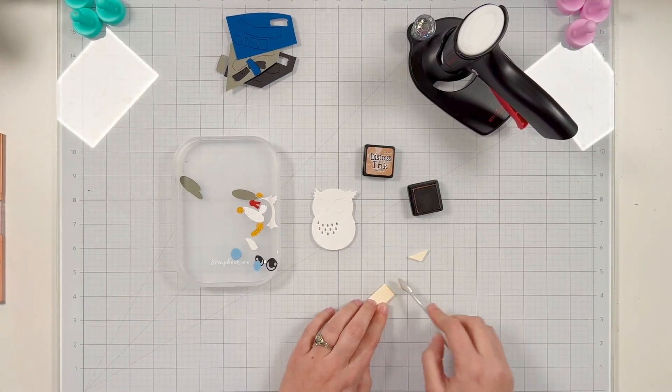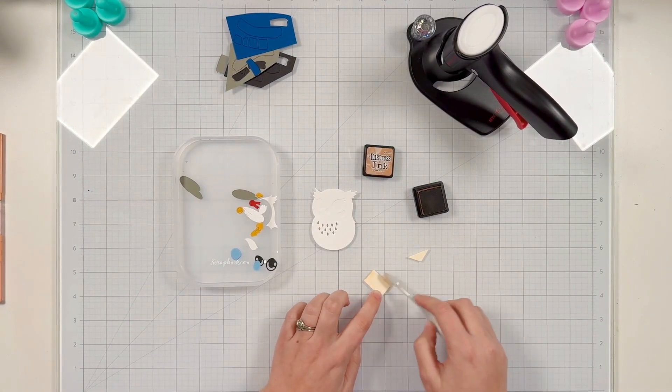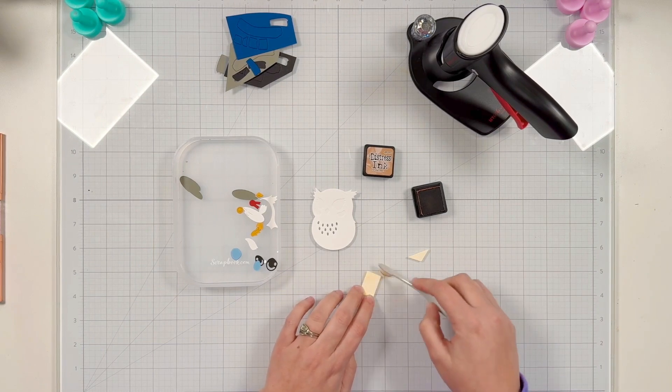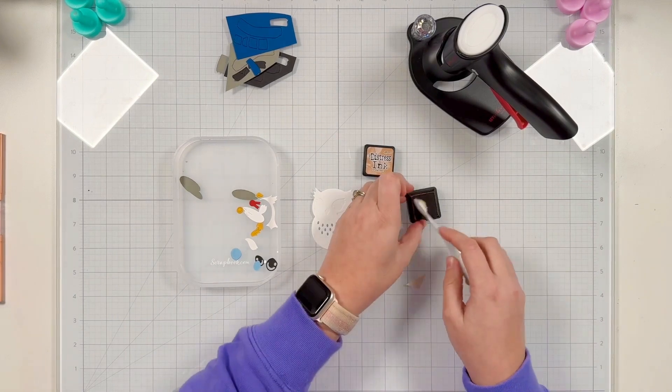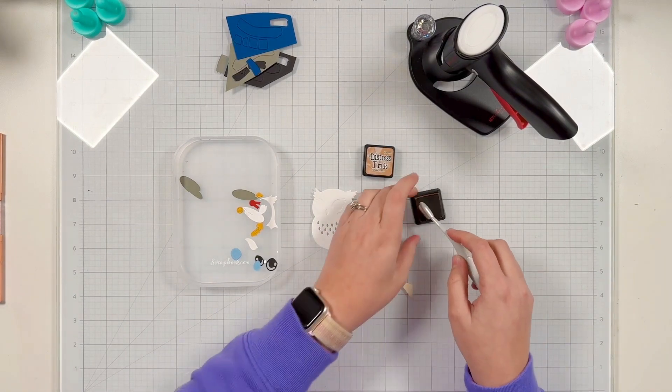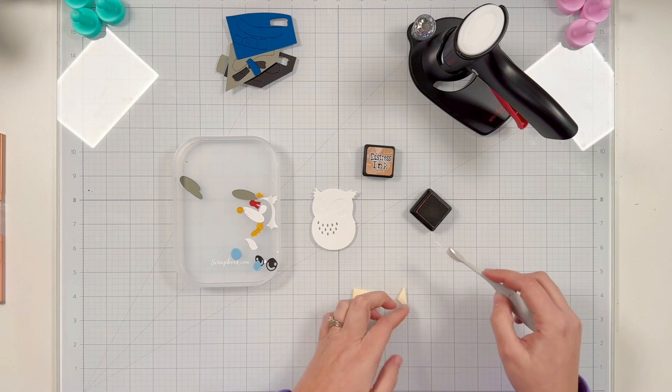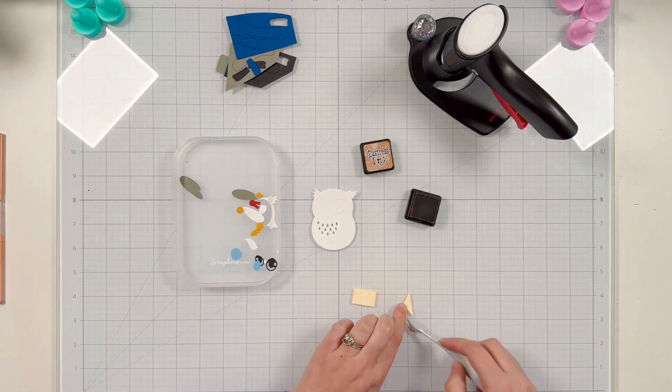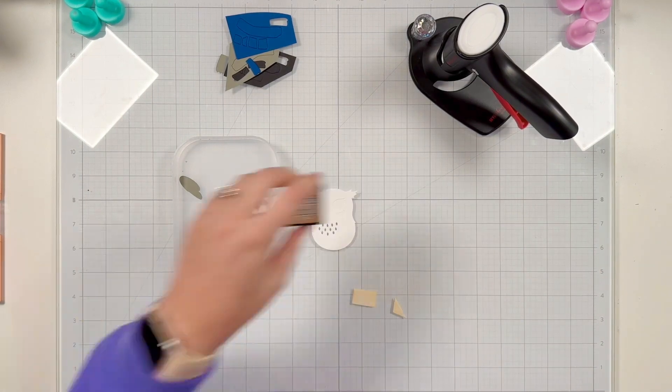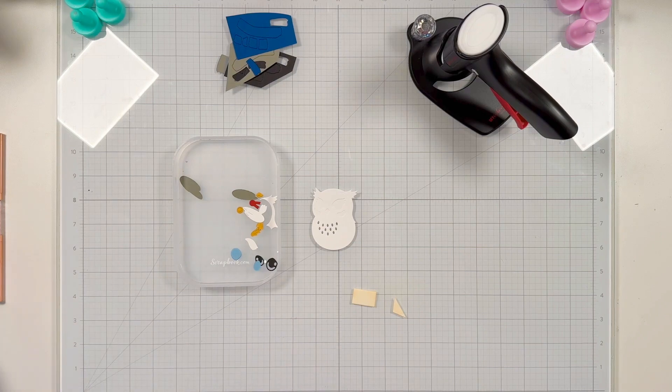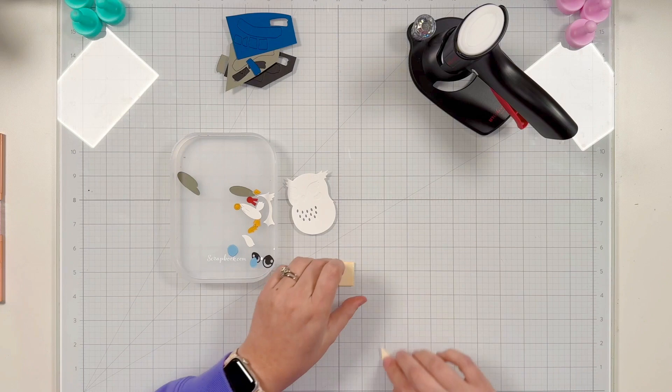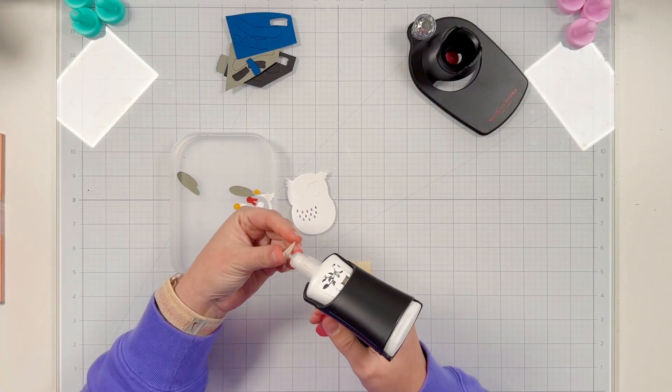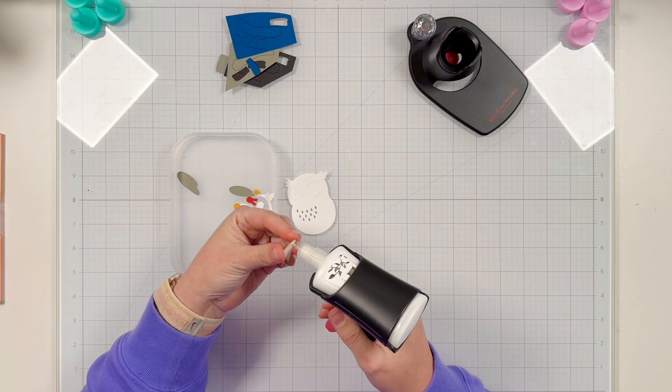I do have everything listed down below in my description box, but we will talk through it as we assemble. I didn't really want to add any distressing ink or any type of inks to my die cuts. I wanted to put it together just as is, but I'm going to make a fandom-inspired owl here. I really wanted it to look like Hedwig from Harry Potter. So I am taking a little bit of tea dye distress ink and just trying to distress my little envelope just a bit.